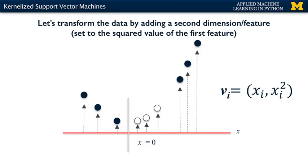So what can we do about this? One very powerful idea is to transform the input data from a one-dimensional space to a two-dimensional space. We can do this by mapping each one-dimensional input data instance xi to a corresponding two-dimensional ordered pair (xi, xi squared), whose new second feature is the squared value of the first feature. We're not adding any new information in the sense that all we need to obtain this new two-dimensional version is already present in the original one-dimensional data point. This might remind you of a similar technique that we saw when adding polynomial features to a linear regression problem earlier in the course.